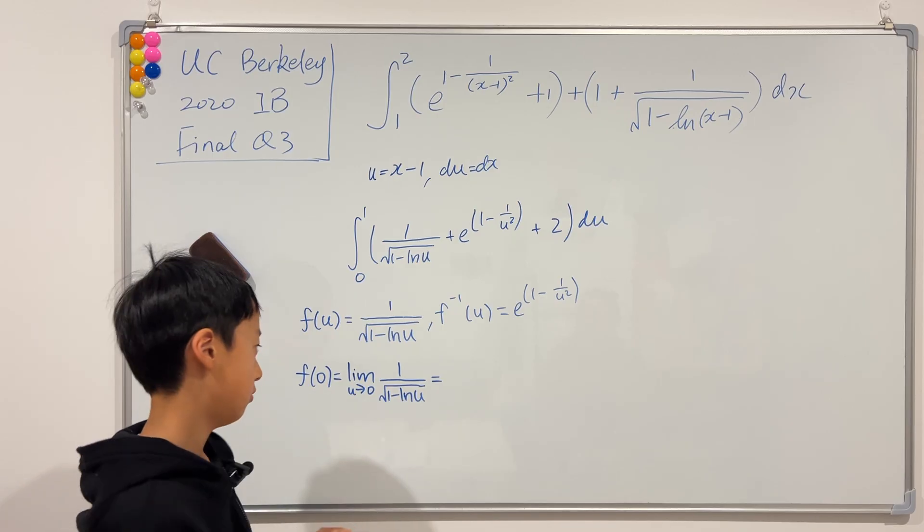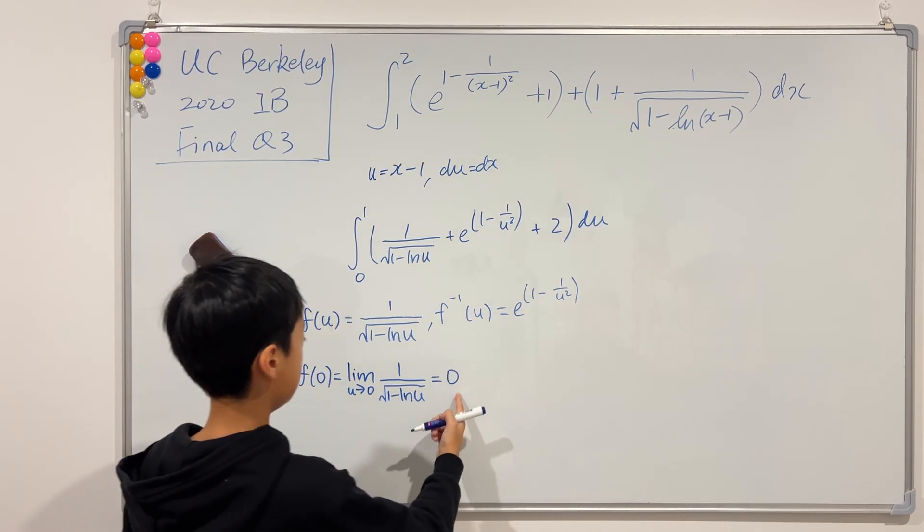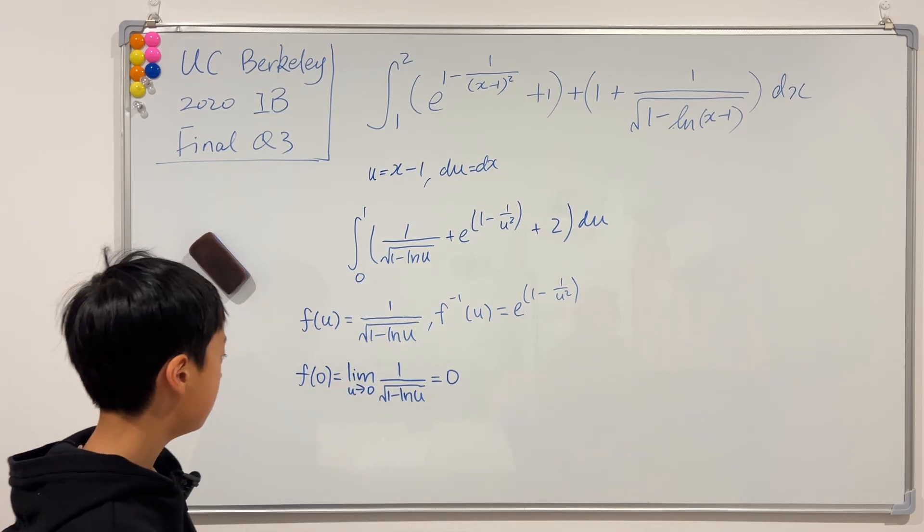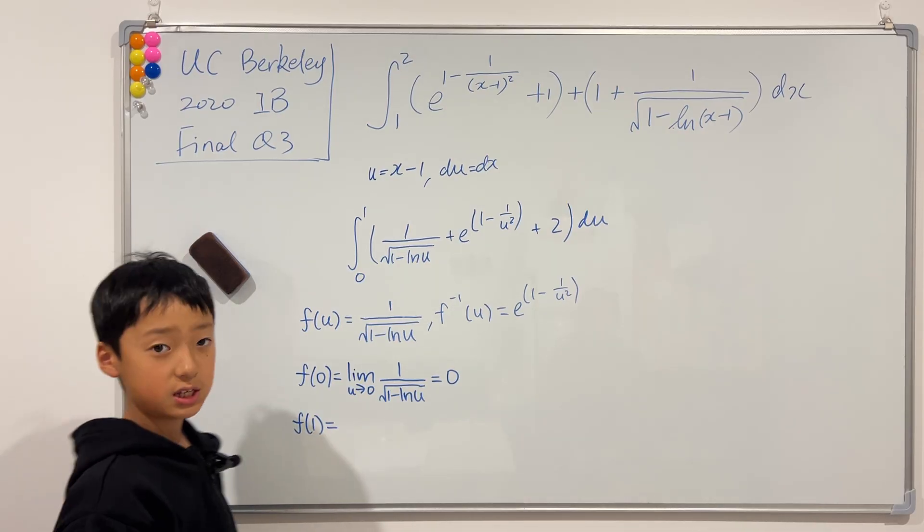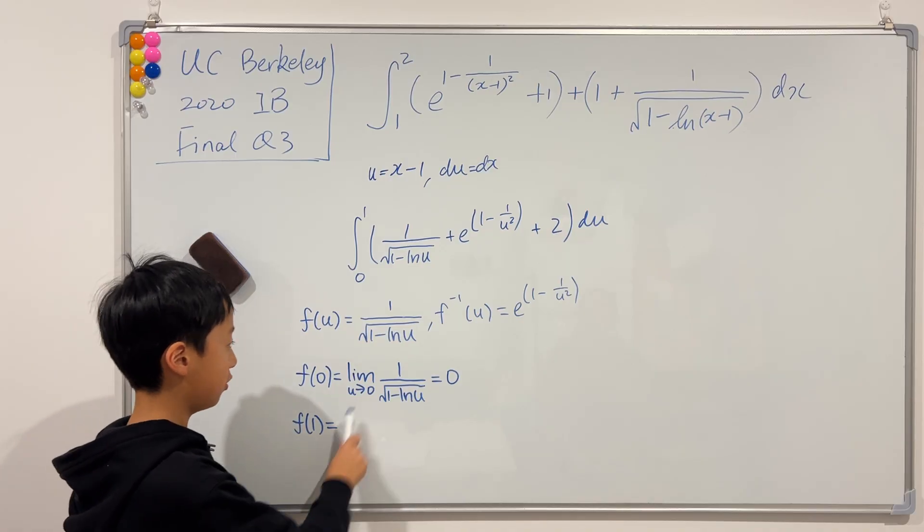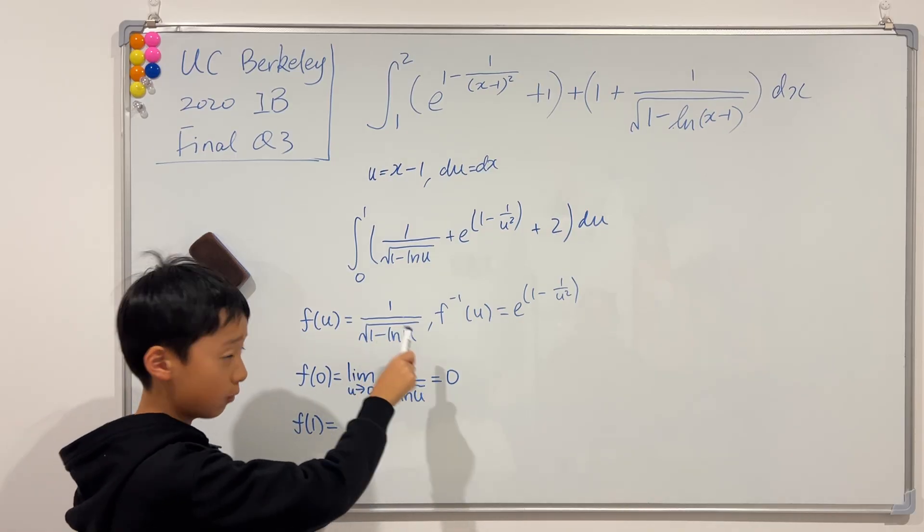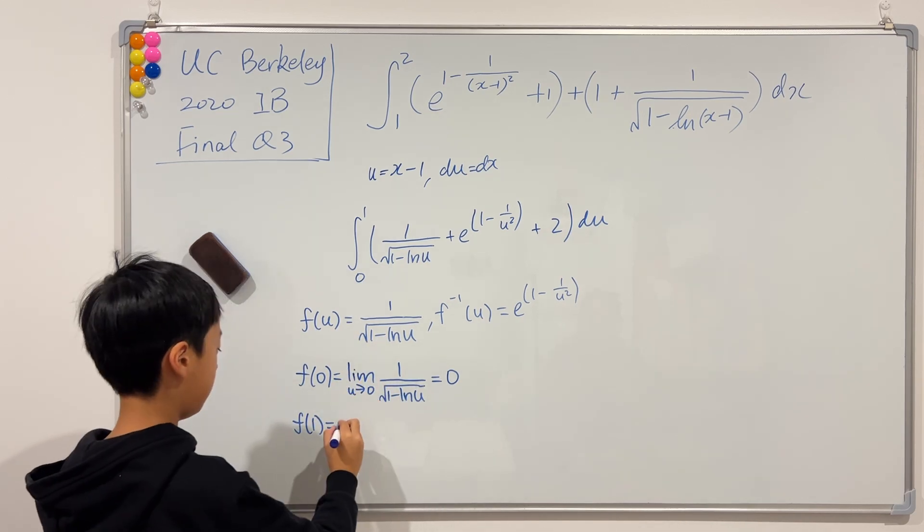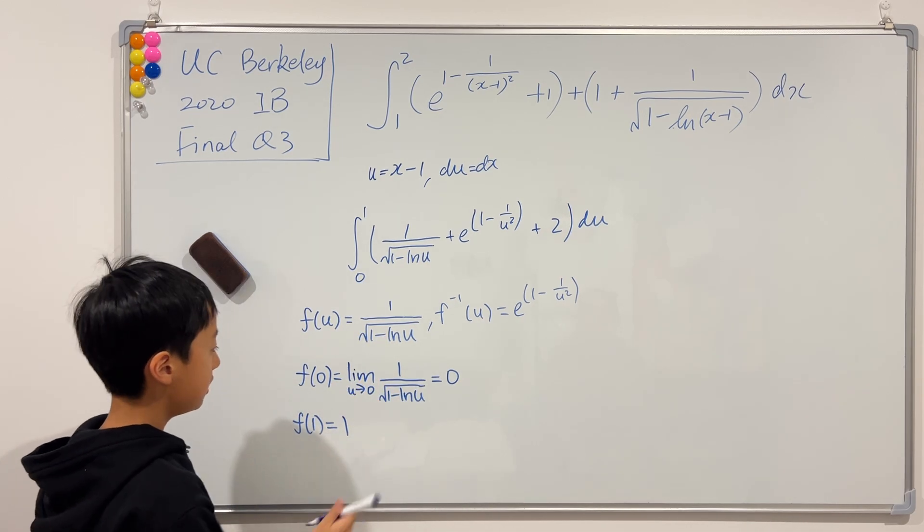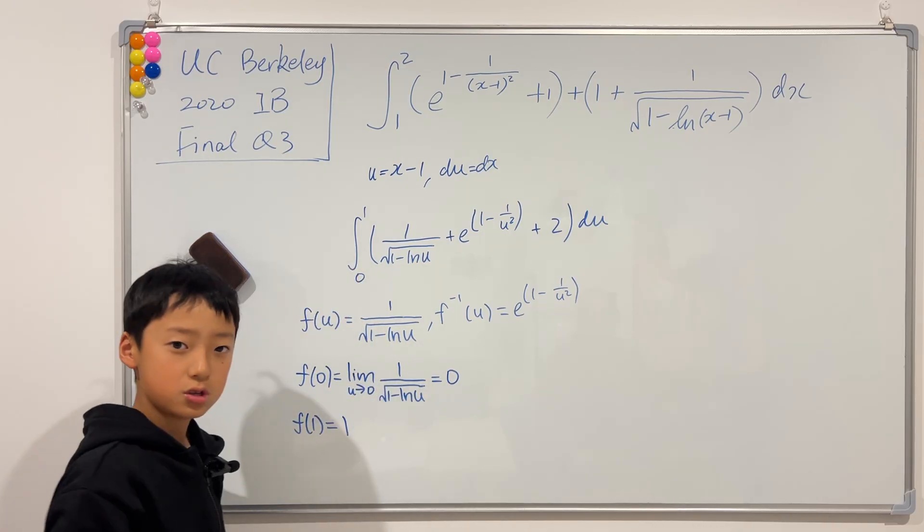Now f(1) is pretty straightforward. Just plug in the 1. 1 minus 0, which is 1. 1 over square root of 1 is 1. So f(1) is 1. Now look, the same bounds, so we're good to go.